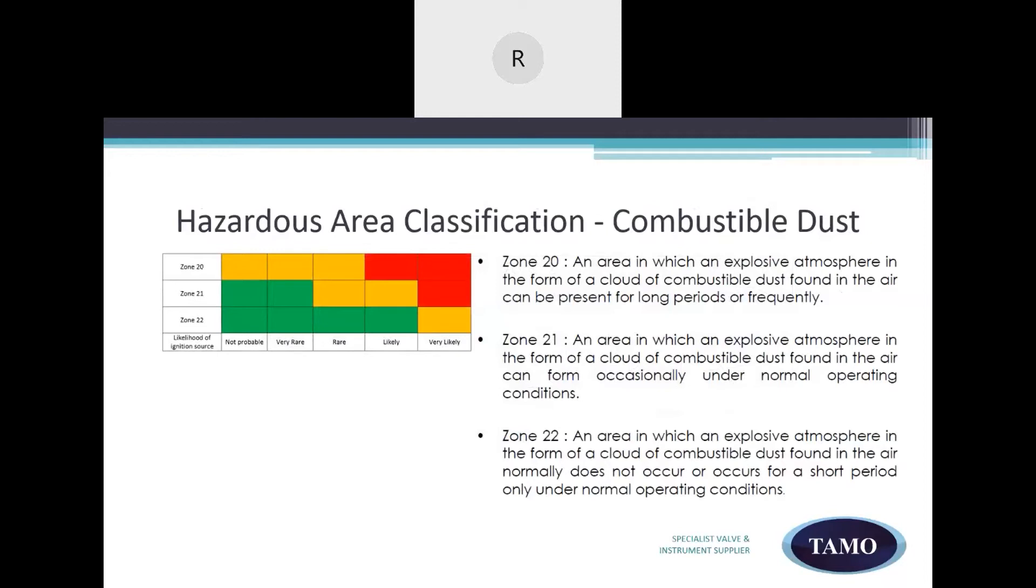Let's look at the hazardous area classification for combustible dust. The zone system also covers combustible dust under Zone 20, Zone 21, and Zone 22. Dust zoning is much simpler than zoning for gases and vapors. This is partly because dust rarely moves farther than a meter from the source of release due to its tendency to settle on the ground. The zones are set as Zone 20 is the high probability of explosive atmosphere, Zone 21 is medium probability, and Zone 22 is the lowest probability.